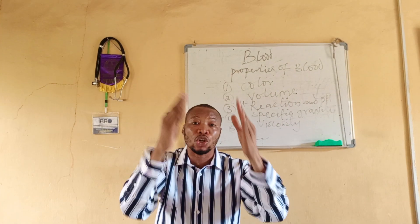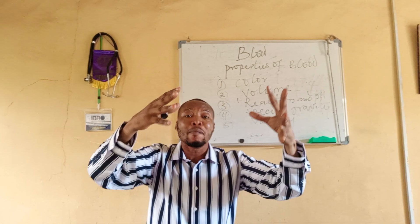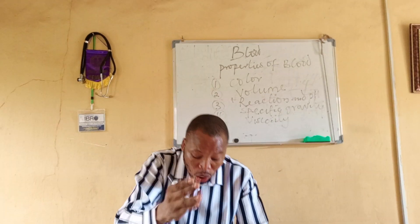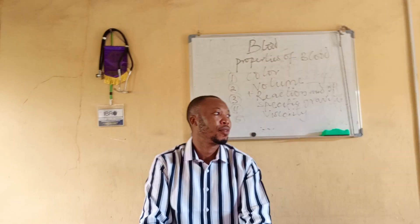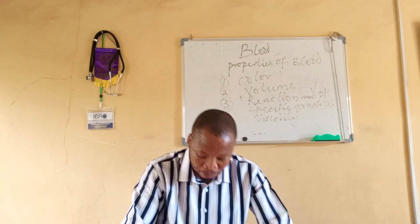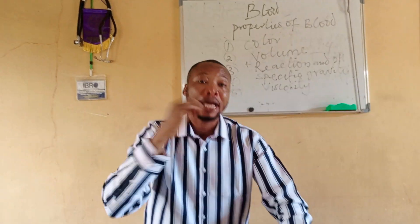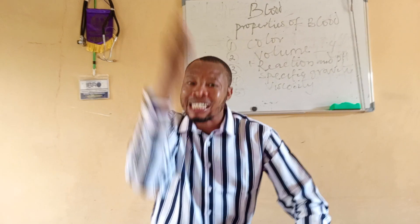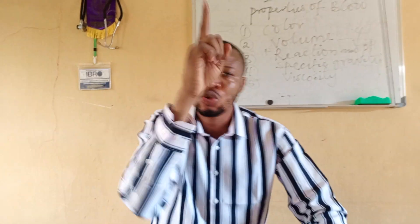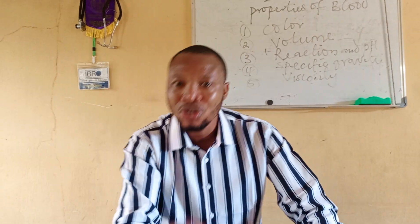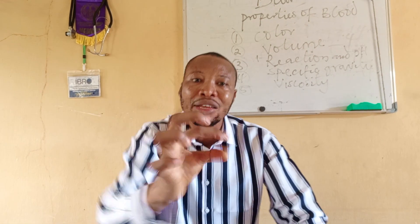In terms of the composition of blood — what is present in blood — blood contains blood cells, which are called the formed elements. The formed elements are classified into three: one, the erythrocytes, which are red blood cells; two, the leukocytes, which are white blood cells; three, the thrombocytes, which are platelets.